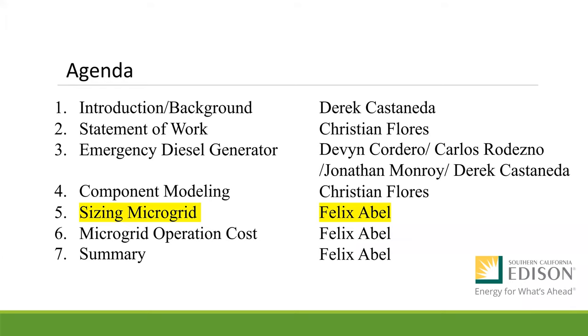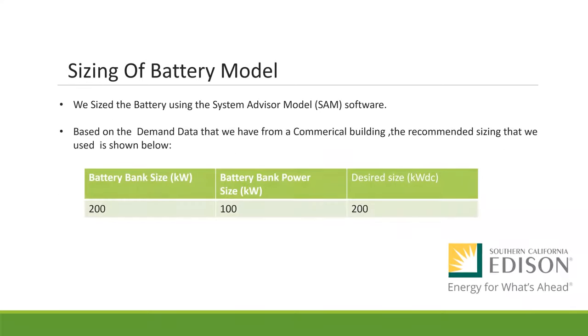I'll be passing it on to Felix Abel, where he's going to discuss sizing of the microgrid. Sizing of the microgrid is important to ensure that we have enough battery bank power and a big enough PV array size to meet our demand and also have resiliency in our microgrid system. We sized our battery using the system advisor model software from the National Renewable Energy Laboratory. Based on the demand data that we have from the commercial building, the recommended sizing that we used is shown below. Our battery bank size is 200 kilowatts, our battery bank power is 100 kilowatts, and our desired size for PV array is 200 kilowatts DC.